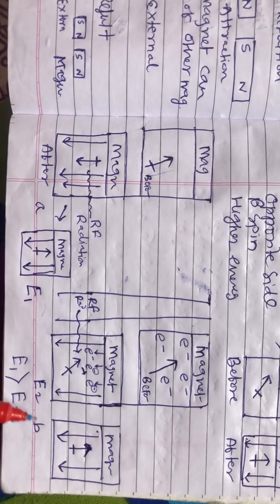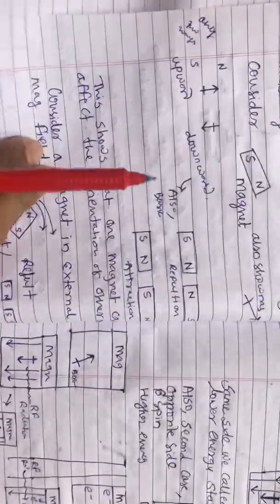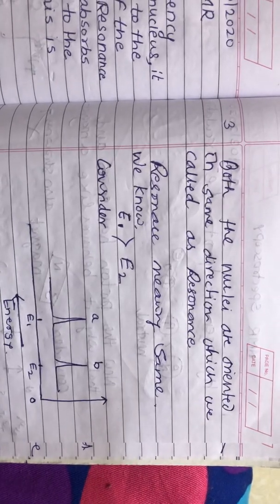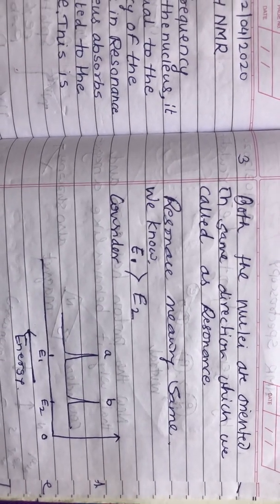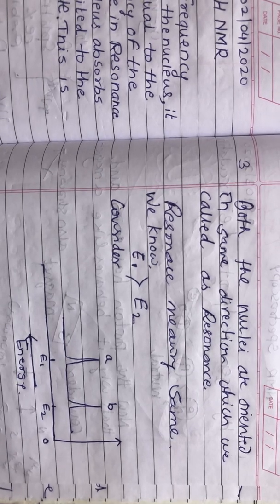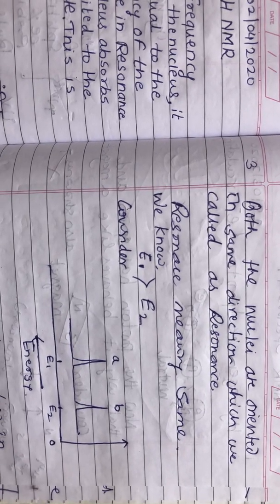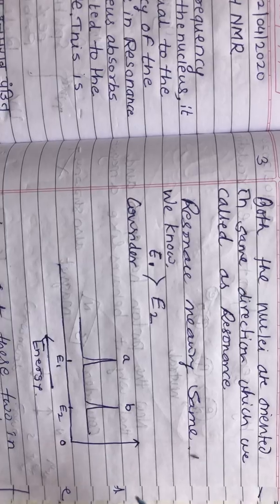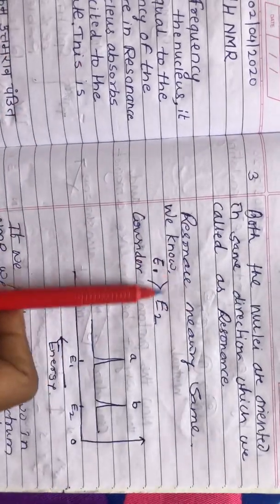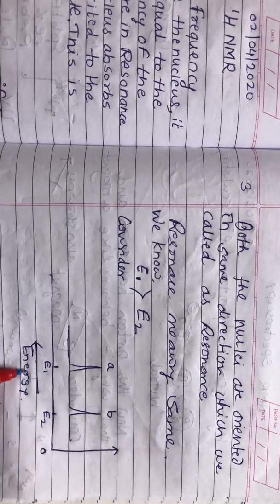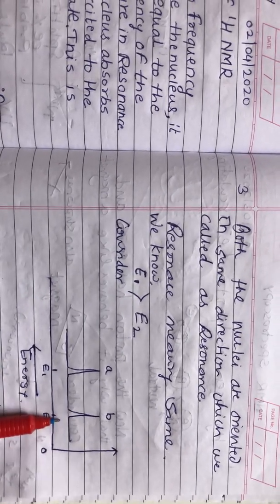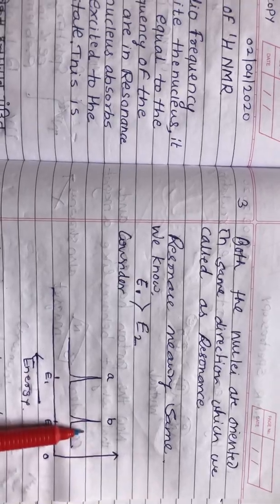From the graph we can see E1 is greater than E2. If you plot the graph starting from zero energy on x-axis, E1 is greater than E2, A and B. This is nothing but the shielding and deshielding.